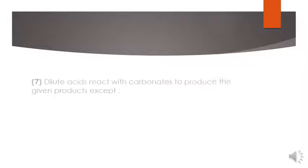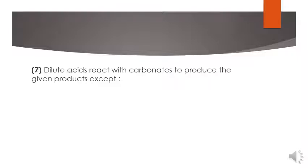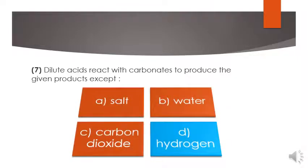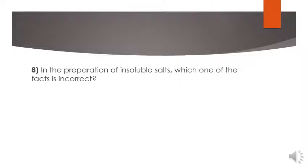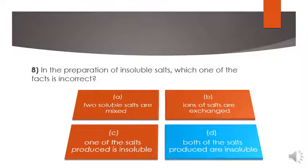The next MCQ is: dilute acid reacts with carbonate to produce the given products except. Options: two soluble salts are mixed is correct, ions of salts are exchanged is correct, one of these salts produced is insoluble is correct. So D option, both of these salts produced are insoluble, is the wrong option because one salt is soluble and other salt is insoluble. According to our statement, we select the wrong statement. So D option is correct.